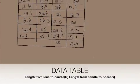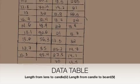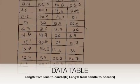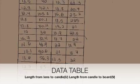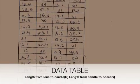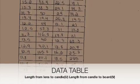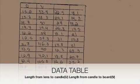These are the results that we got from our lab. As you can see, there is a trend in the way the data is displayed — as the value of U increases, the value of V decreases.